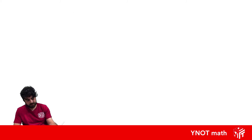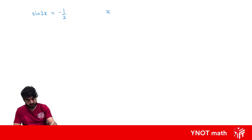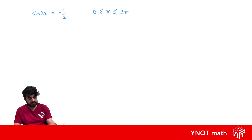Let's look at another example where we have sin 2x = −½, solving for x between 0 and 2π. The difference this time is that we don't have sin x — we have sin of 2x — and this is actually going to change our domain, so we should adjust the domain to reflect this.